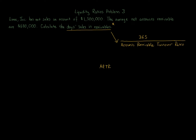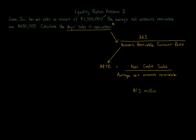The ARTR — accounts receivable turnover ratio — is net credit sales over average net accounts receivable. These numbers are given in the problem. We have $1,500,000 in net sales on account, which equals net credit sales, and the average net accounts receivable is $680,000. So the ARTR equals $1,500,000 divided by $680,000, which gives us 2.21.